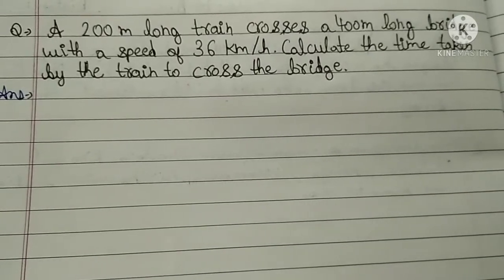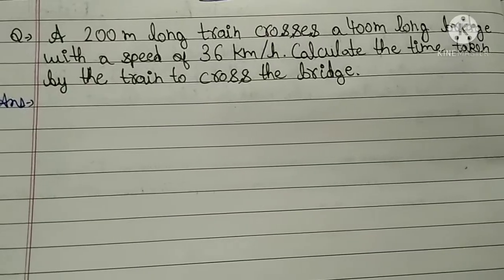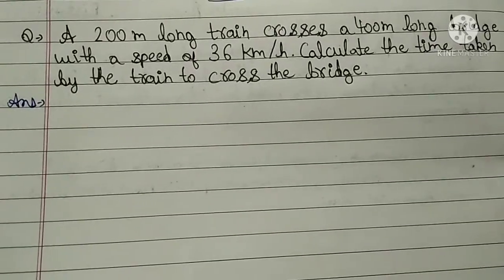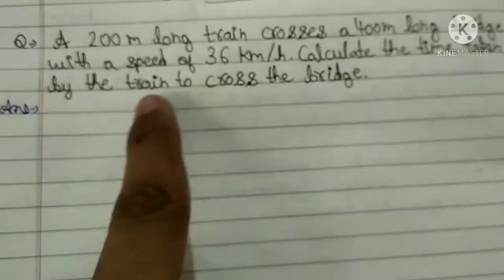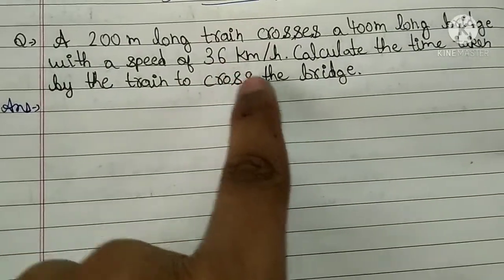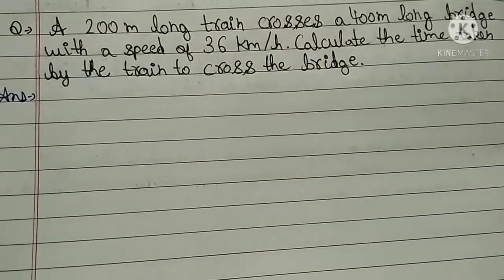Hello friends, welcome to Fantastical Study. In this video I am going to solve a question. A 200 meter long train crosses a 400 meter long bridge with a speed of 36 km per hour. Calculate the time taken by the train to cross the bridge.